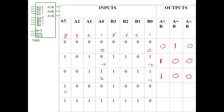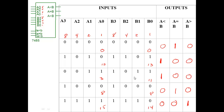For this one, A has an eight and B also has an eight — they're equal. So put a one on the equal output and lows on the other two. For the last example, A is eight plus four plus two plus one, which is 15, and B is eight plus four plus two, which is 14. In this case A is larger than B, so A is greater than B — put a one there and lows in the other two. We're just looking numerically at which number is greater than, equal to, or less than the other.